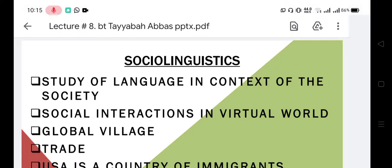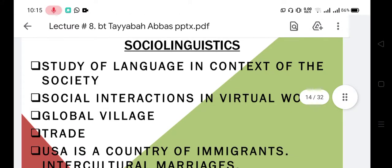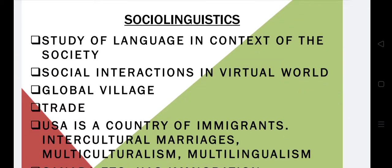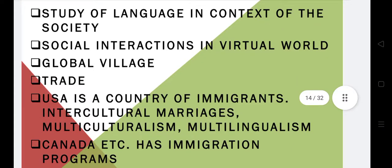Hello friends, welcome to my channel. In this video I am going to discuss sociolinguistics and spelling reforms in English language. Let's get started. As the word indicates, 'social' is related to society or social life, so sociolinguistics is the study of language in context of society and social interactions.